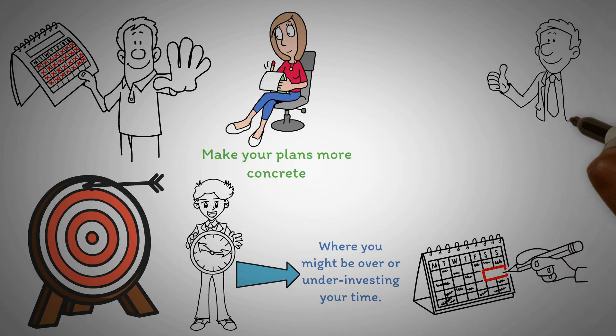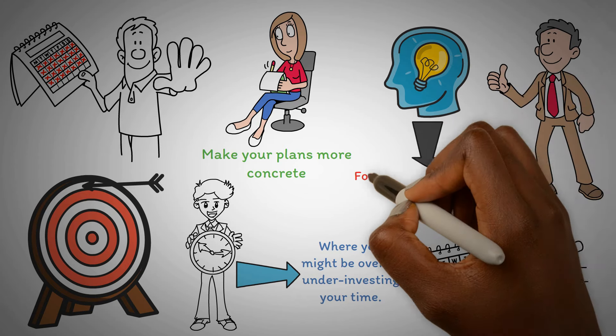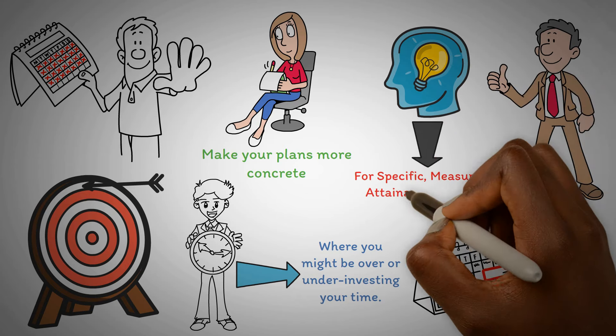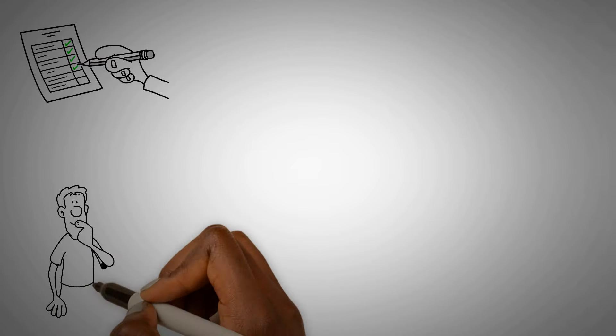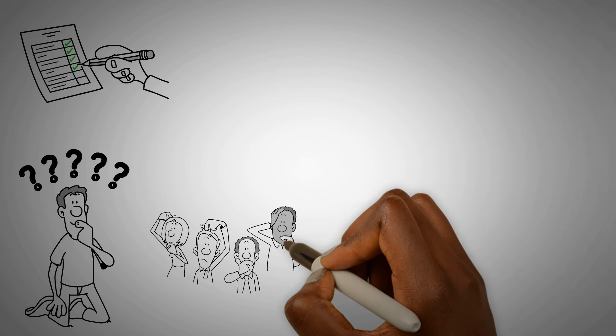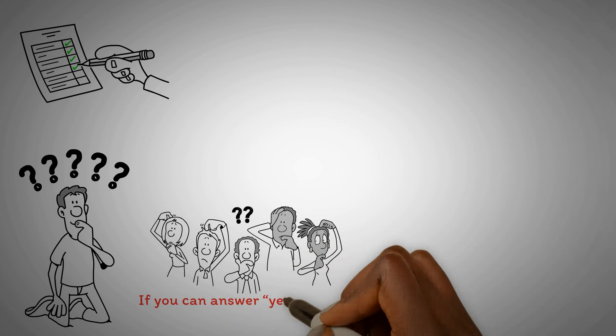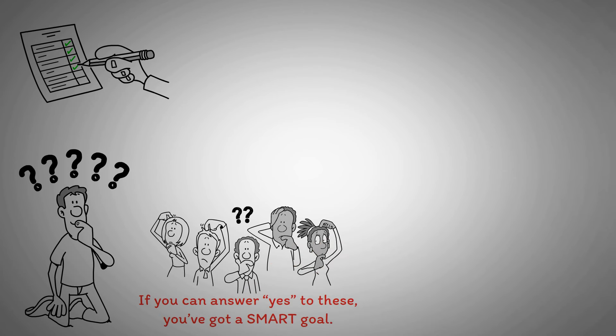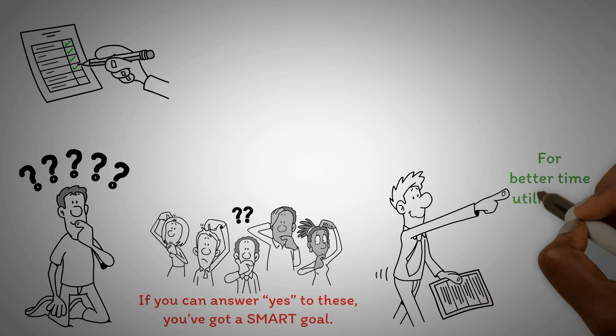Skeptical? Often we embark on tasks without a clear strategy. This is where the SMART framework comes in handy. It stands for specific, measurable, attainable, relevant, and time-bound. Apply this checklist to your goals. Are they well-defined, measurable, achievable? Do they align with your broader objectives? Can you accomplish them in your set time frame? If you can answer yes to these, you've got a SMART goal.